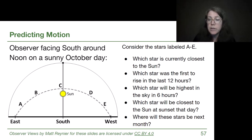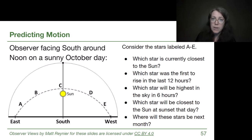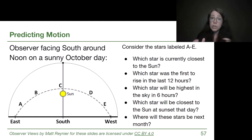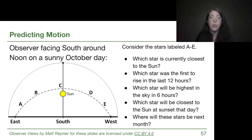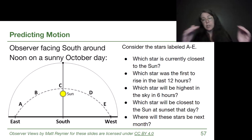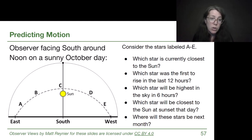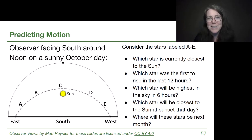The last question — where will these stars be next month — is one I don't expect you to feel confident answering yet. That's what we'll explore in the next video, section 1.5: rather than daily motion from Earth's rotation, we'll talk about what happens as we move around the sun, changing our perspective of which stars are in the nighttime sky. All these stars will shift so that in about a month it will be star B that is closest to the sun. I look forward to working with you in that next video.